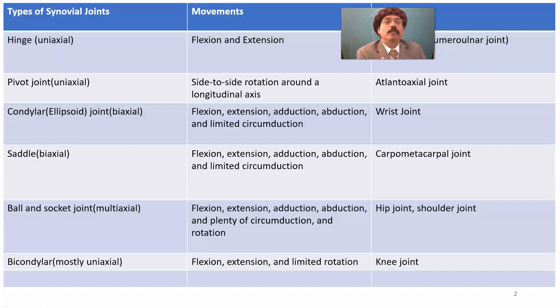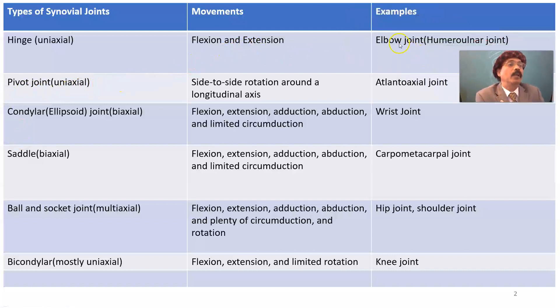Hinge joint has uniaxial movement — flexion and extension. A typical example is the elbow joint, and another example is the interphalangeal joint.